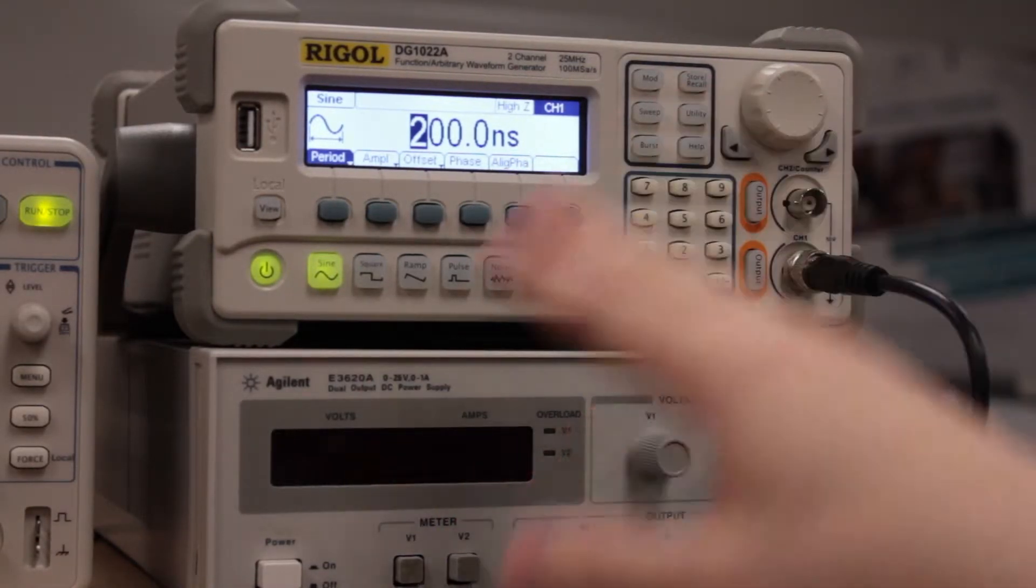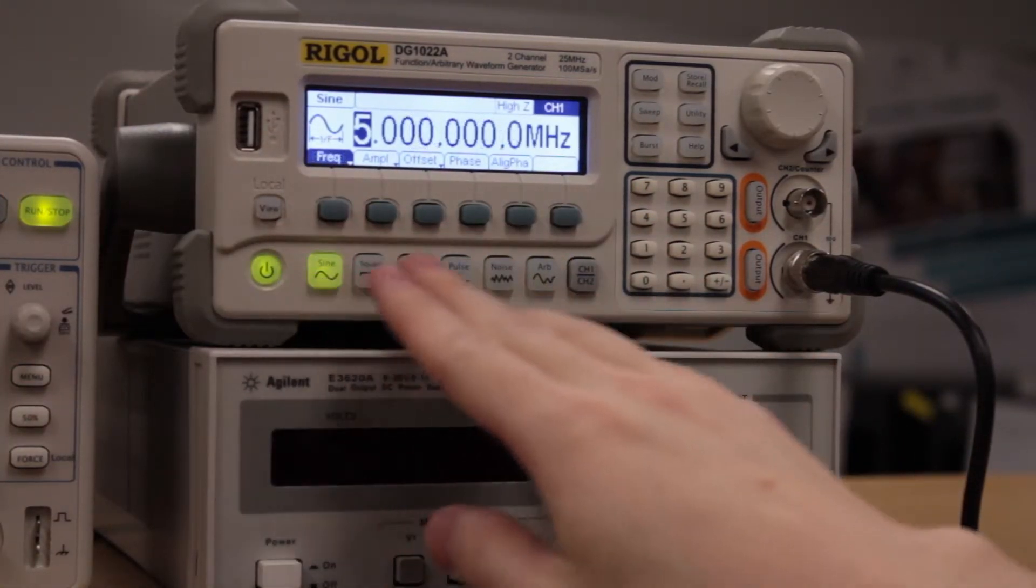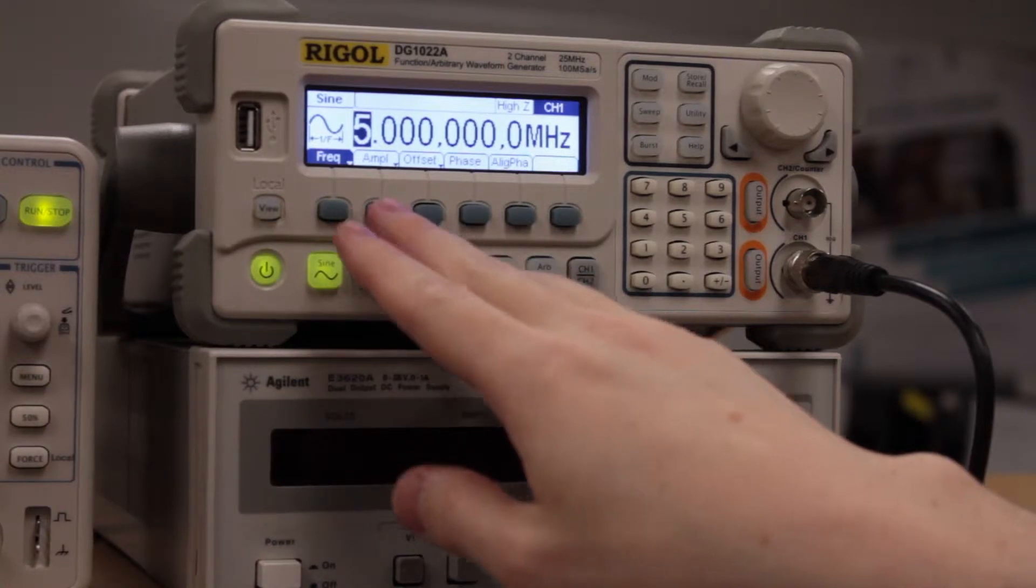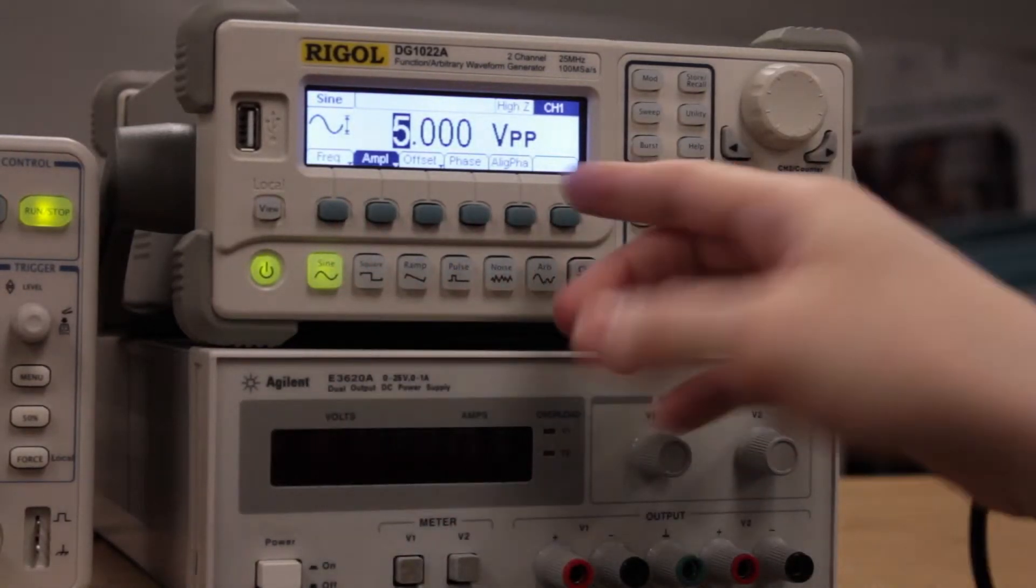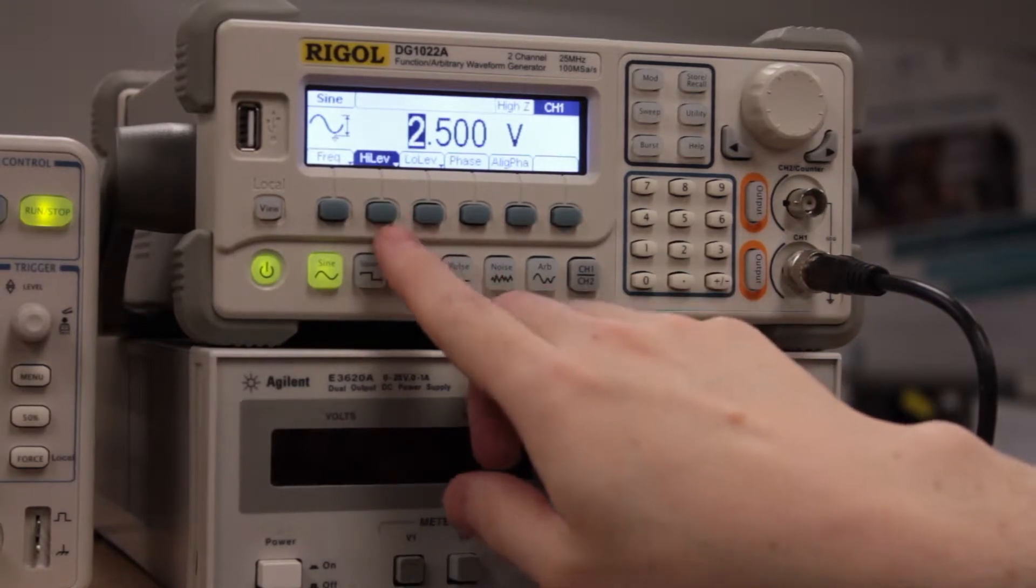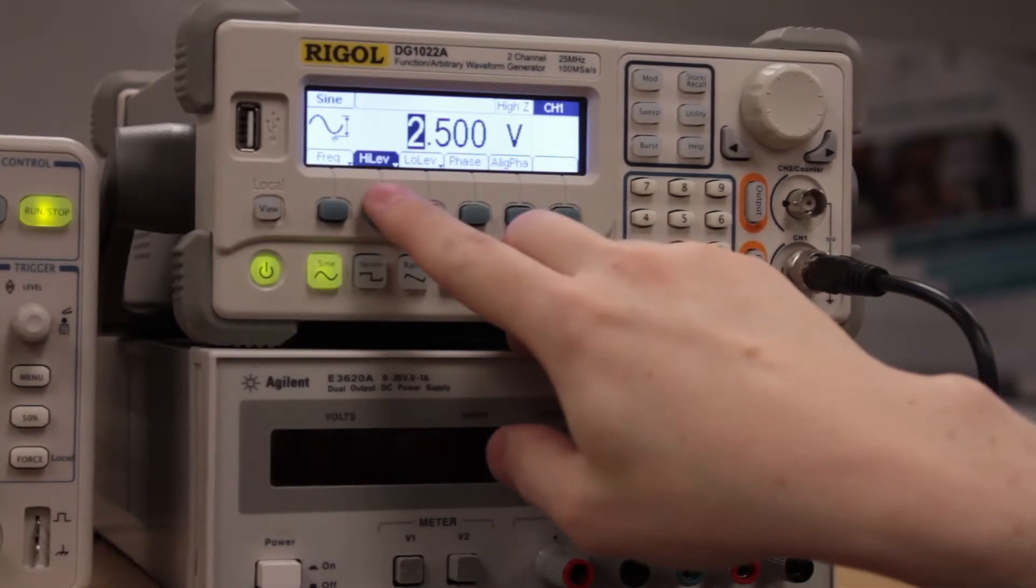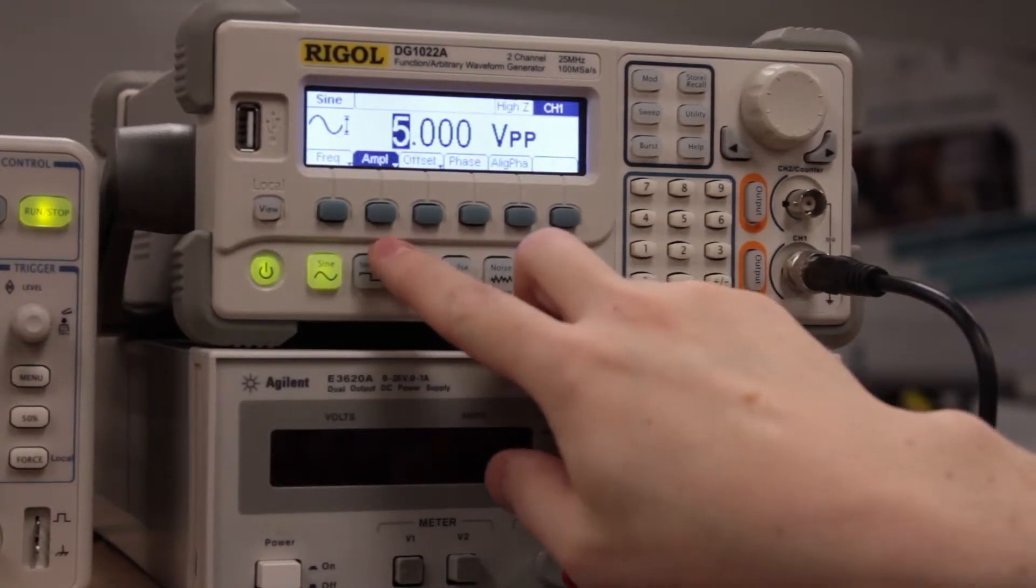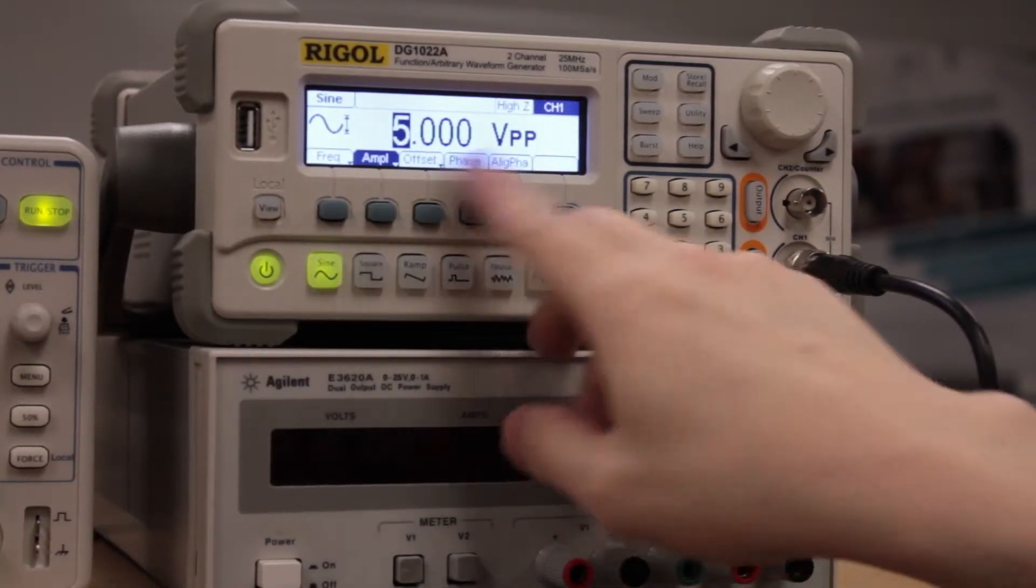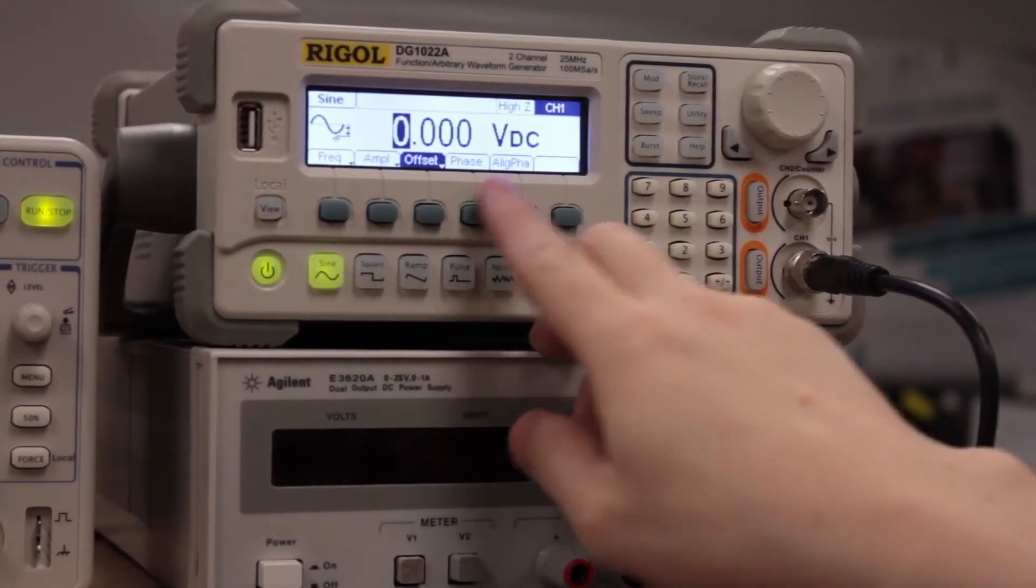Now for amplitude, we just hit amplitude here and we have peak to peak. If we hit it again, we can have just total voltage for the high side. We can set it to say five volts peak to peak, and then we can actually have it with a DC component.